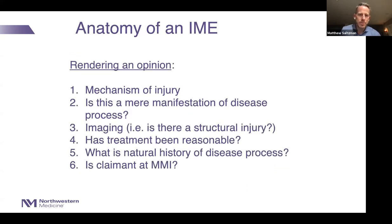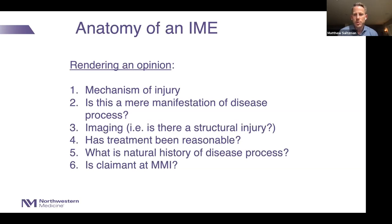One of the tenets of an IME is how you render an opinion. A big factor is mechanism of injury — is this just a mere manifestation of disease, or was there a specific mechanism that caused this worker to be injured? Then consider imaging: is there a structural injury? Has the treatment been reasonable? You need to understand the natural history of the disease process in question. And you will always be asked: is the claimant at MMI — maximum medical improvement?